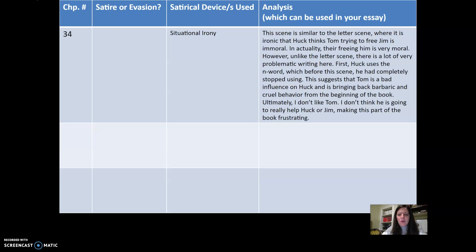However, unlike the letter scene, there is a lot of very problematic writing here. First, Huck uses the n-word, which before this scene he had completely stopped using. This suggests that Tom is a bad influence on Huck, bringing back barbaric and cruel behaviors from the beginning of the book. Ultimately, Tom doesn't seem like he'll really help Huck or Jim, making this part of the book frustrating.